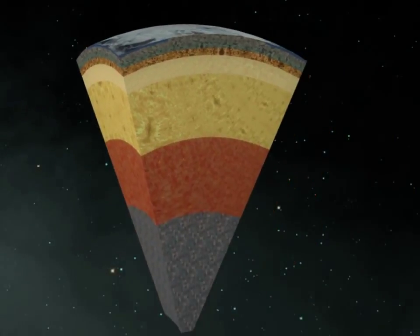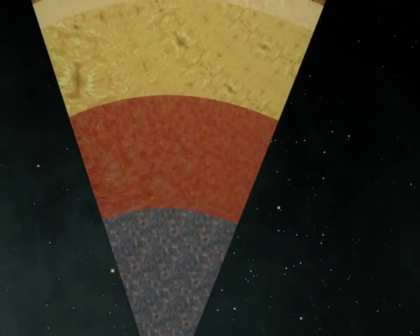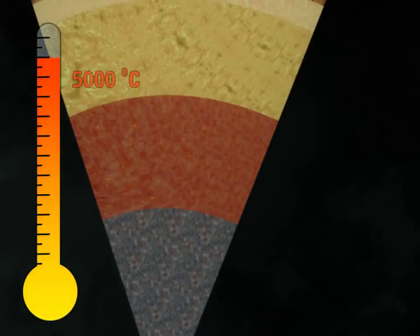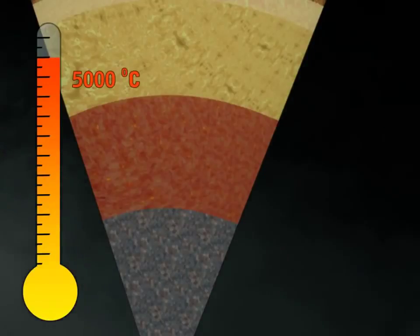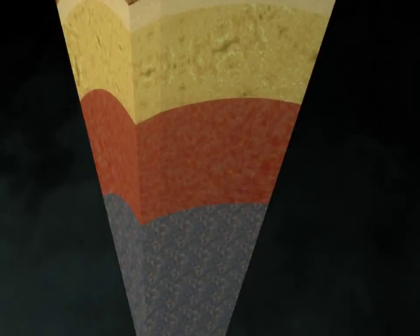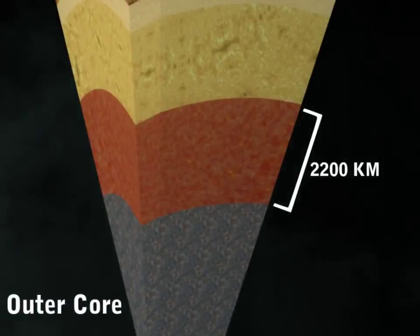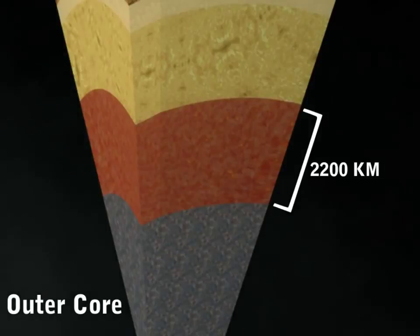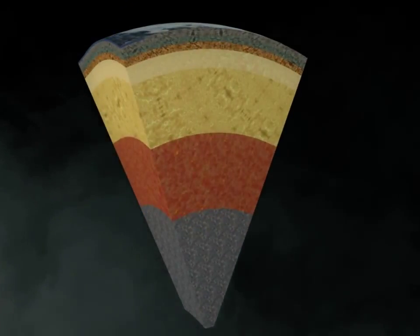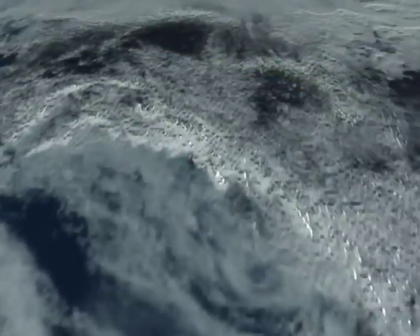The next layer of the earth is the outer core. This layer is exceedingly hot. It has a temperature of about 5,000 degrees Celsius. The outer core consists mainly of liquid iron. It has a depth of 2,200 kilometers. The core-mantle boundary is located at 2,900 kilometers below the surface of the earth.